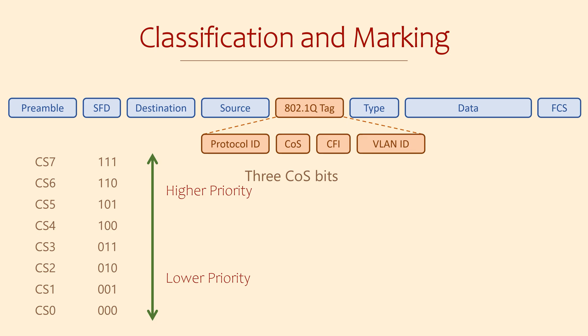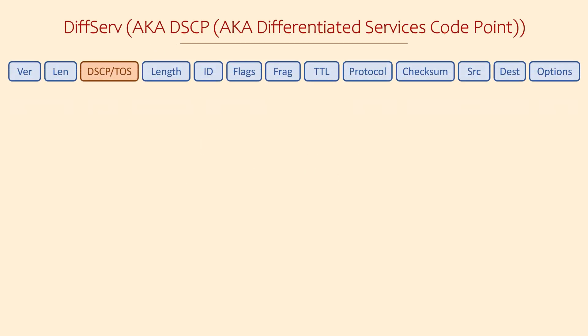The original type of layer 3 marking was IP Precedence. The IPv4 header used to have an 8-bit field called type of service. Like class of service, routers use three of these bits to mark packets. We call these a Precedence, or Prec0 through to 7.